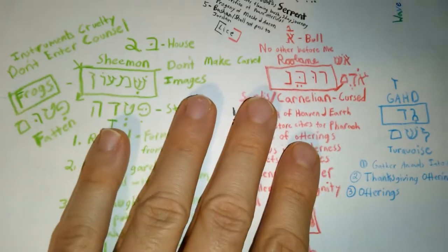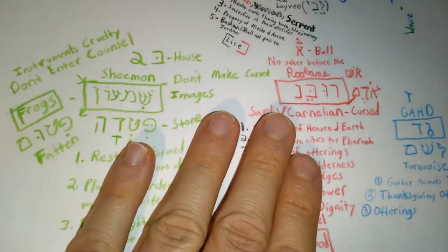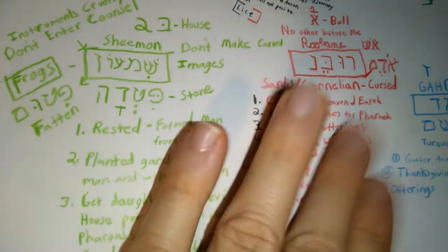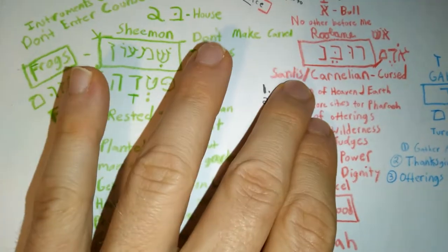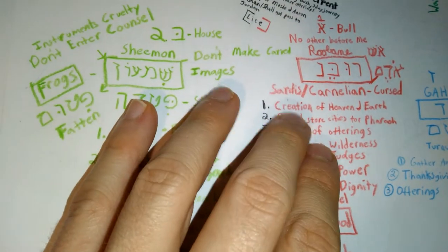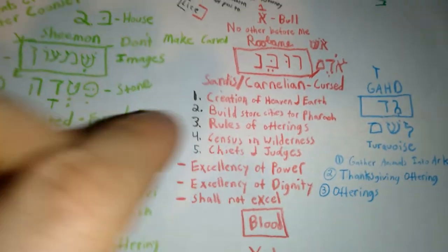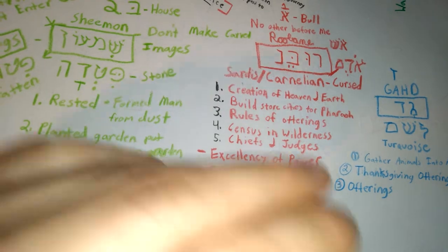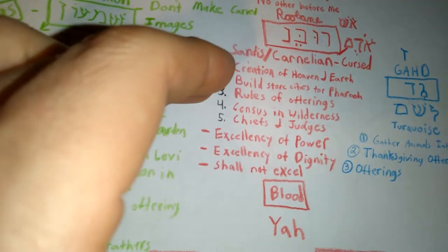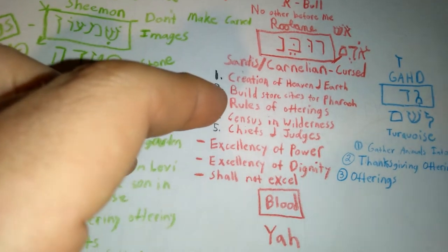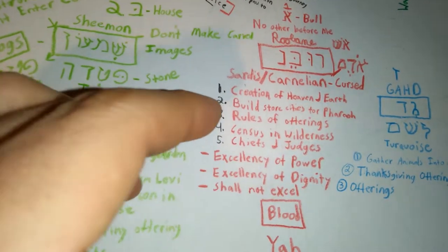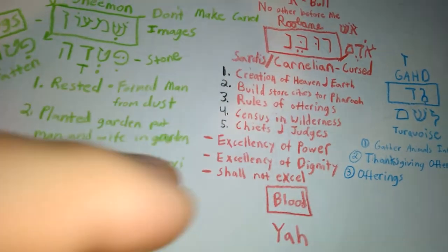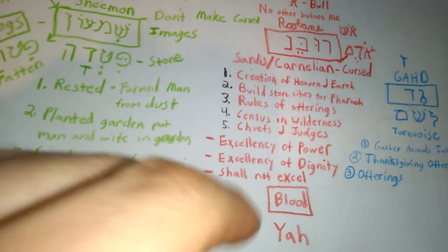We're going to start with number one, Ruben. His stone was an odom or what some might say Sardis or Carnelian. If you notice, there was the creation of heaven and earth. There was the building of store cities for Pharaoh because somebody had to build something for the Pharaoh. There's rules of offerings, a census in the wilderness, the chief and judges, excellency of power, dignity, shall not excel.